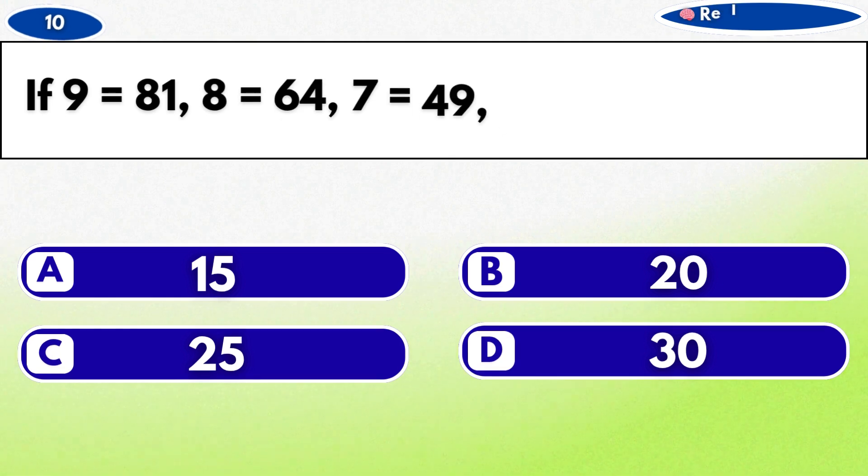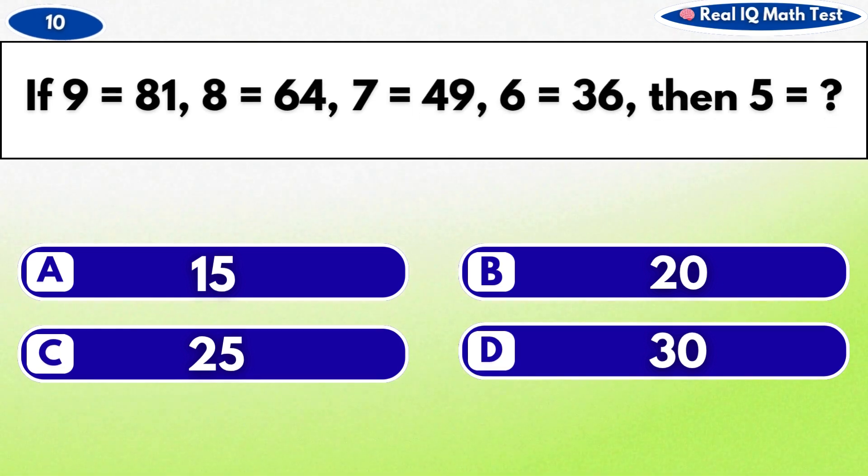If 9 equals 81, 8 equals 64, 7 equals 49, 6 equals 36, then 5 equals.